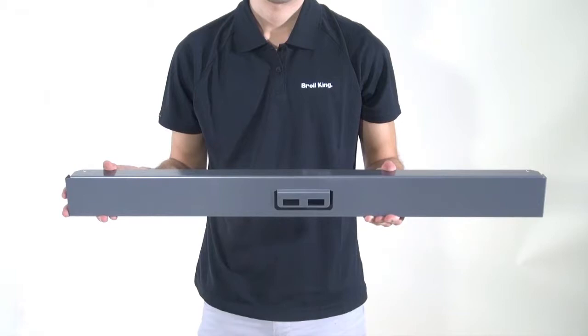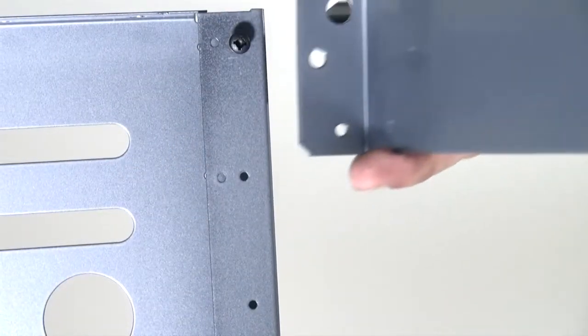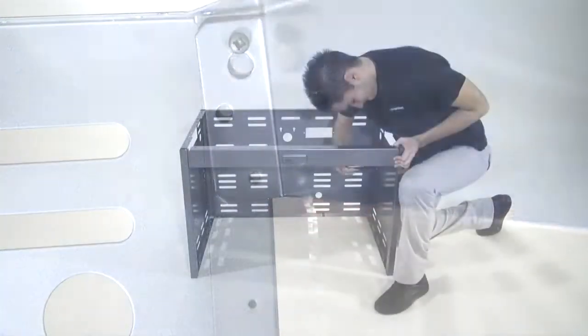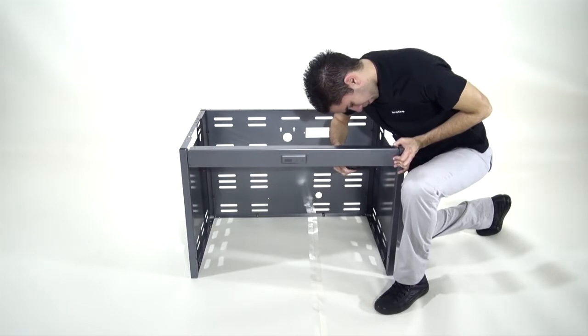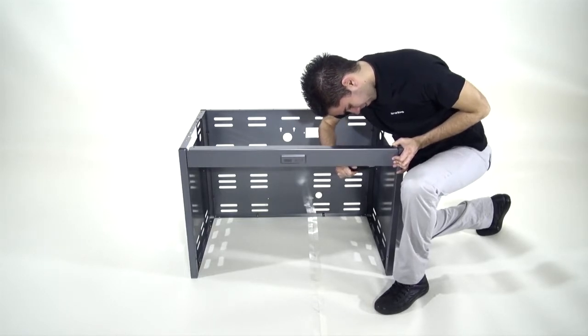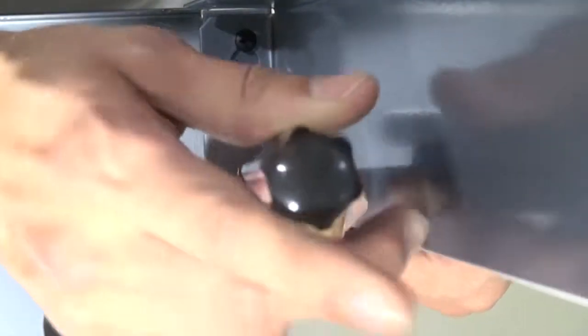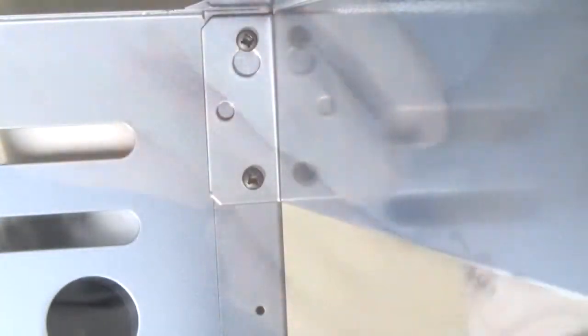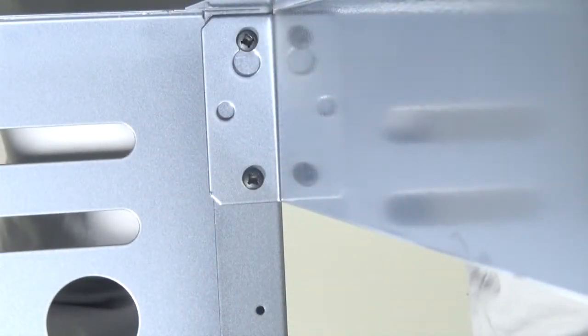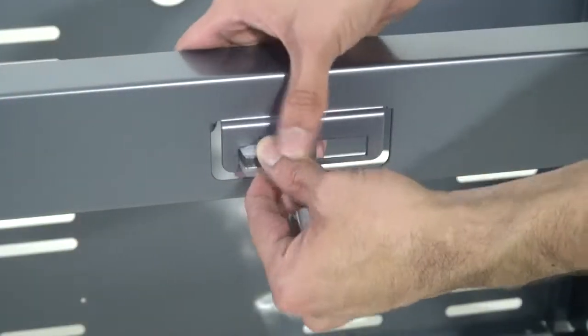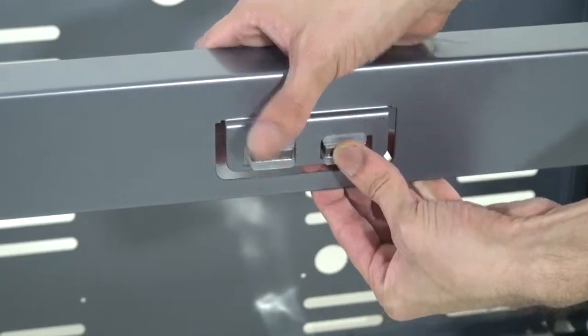To install the door catch bracket, use the pre-started screws to locate the bracket and install the two other screws to secure it. Install the magnets into the door catch bracket by snapping them in place.